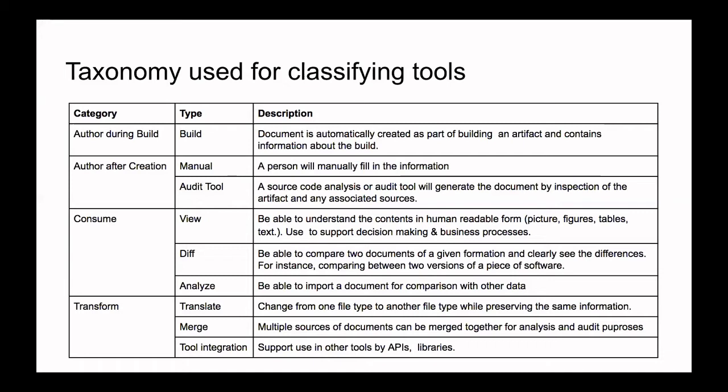Other mechanisms being used are authoring after the tool product has been created. Here you're looking at a manual effort where someone fills in the minimum information just so it can work with the system, and there are also some code analysis or SCA tools that are able to do an analysis and fill in the information.